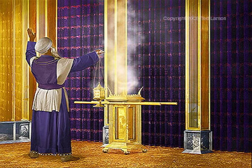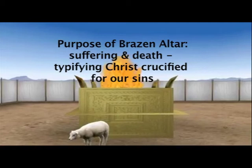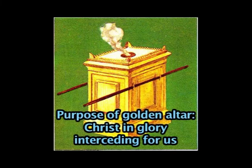The golden altar was the most central piece of furniture in the holy place. It differed from the brazen altar outside in two main ways. Number one — the function: the brazen altar in the courtyard was about death, typifying Christ's suffering and death for our sins, dealing with our need for redemption and reconciliation. The function of the golden altar in the holy place with its incense was an altar of eternal life, typifying Christ after his resurrection and ascension into heaven, ever living to make intercession for the redeemed.